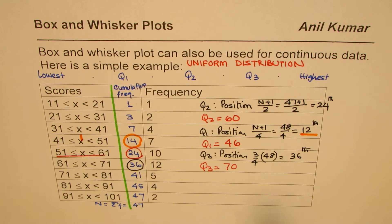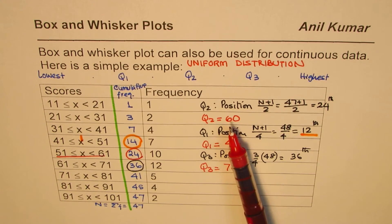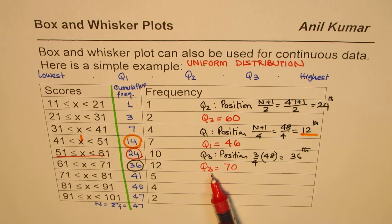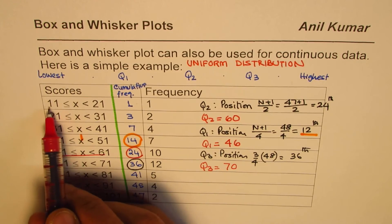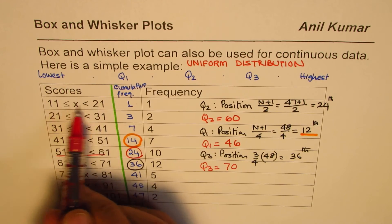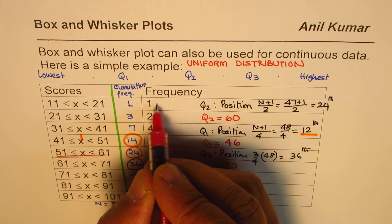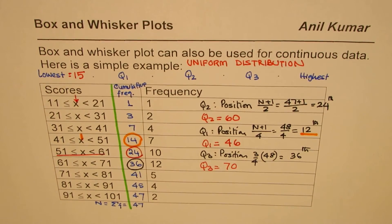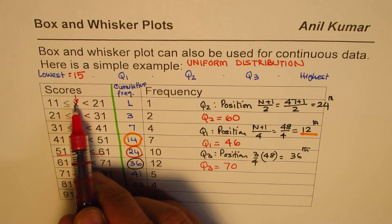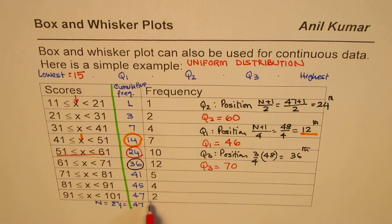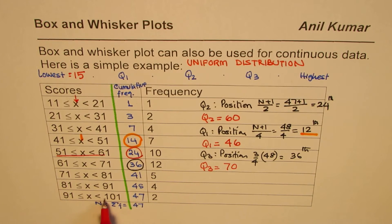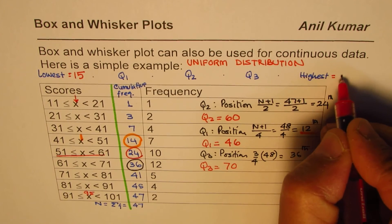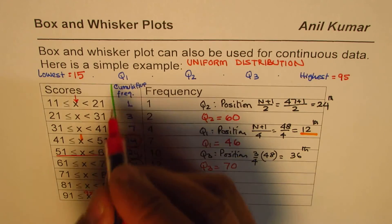So our quartiles are: Q2 (median) = 60, Q1 = 46, Q3 = 70. For the lowest value, the interval is 11 to 21 with one person — we take the center of that interval, so the lowest value is 15. For the highest value, the interval is 91 to 101 with two values, so we take the center: highest = 95.